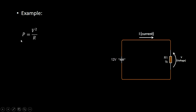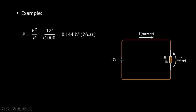We use this formula: power is equal to voltage squared divided by the resistor value. The voltage across the resistor equals the voltage of the power supply, which is 12 volts, and the resistor value is 1 kilo ohm. The power in the resistor is equal to 0.144 watts. This is the first way to calculate the power in the resistor in this circuit.